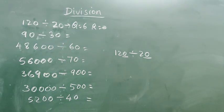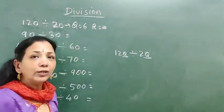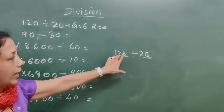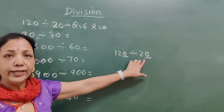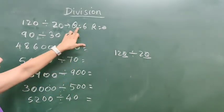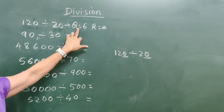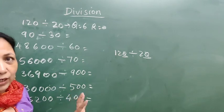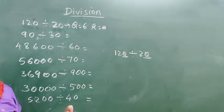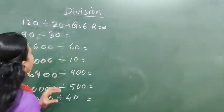Those matching 0s will cancel out — they will cut. So these 0s go, and what is remaining is 12 divided by 2, which equals 6. So quotient is 6 and remainder is 0. Is it clear?